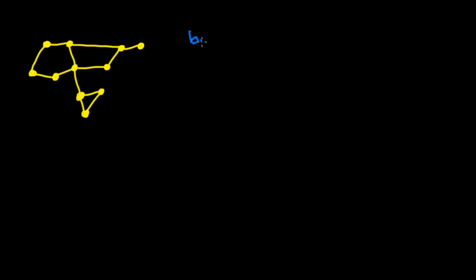I'd like to talk about the idea of an edge being a bridge. In order to discuss this, I want to take a look at an example graph so that it becomes clear. If we look at this graph and we look at all of the edges in the graph, we'll see that some of the edges have different properties than the others.